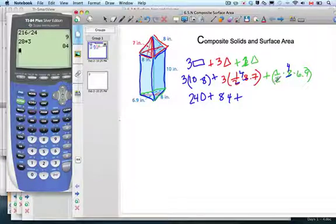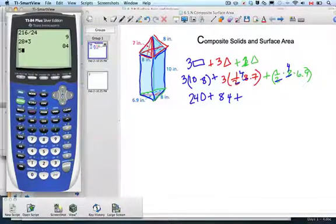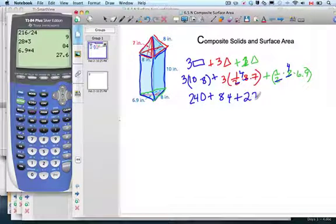This becomes 4. 6.9 times 4. I thought it was 6.9. I thought that was 6 times 9. It is a problem. Times 4, plus 27.6.